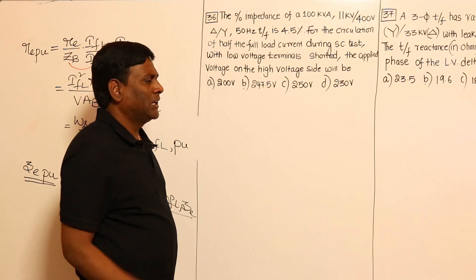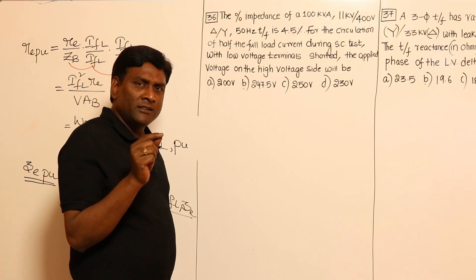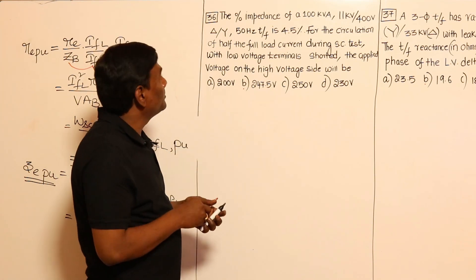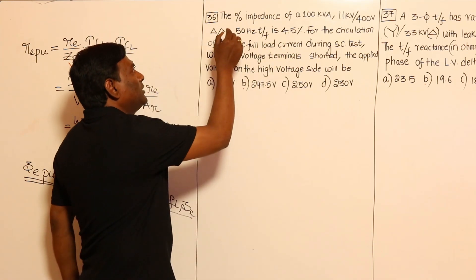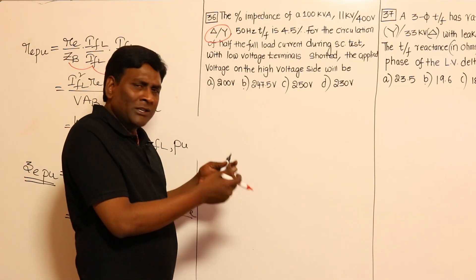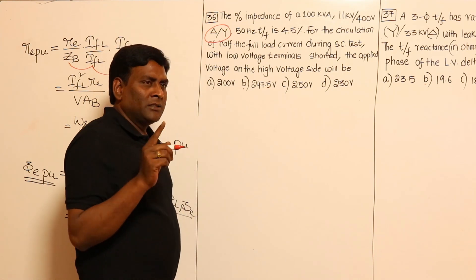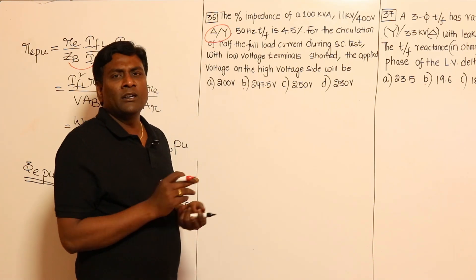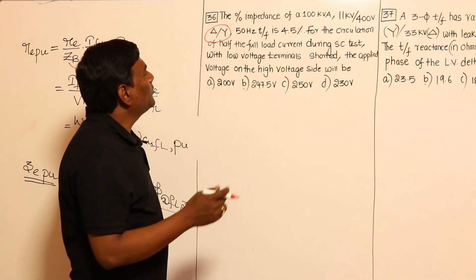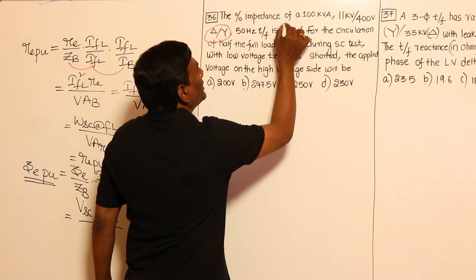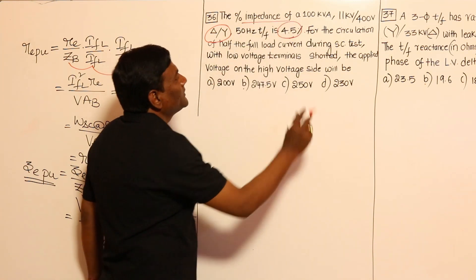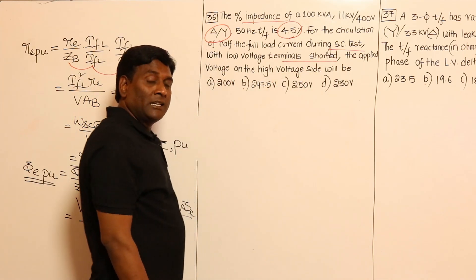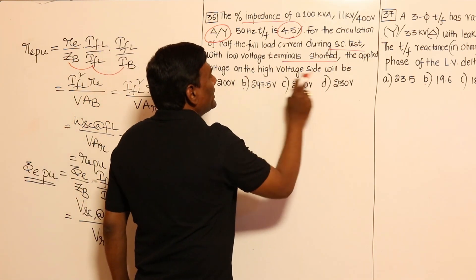This is a two-mark question from old GATE. To crack GATE, it's actually very simple — we just need to be strong in basics. The problem: the percentage impedance of a 100 kVA, 11 kV by 400 V, 50 Hz transformer is 4.5%. For the circulation of half full load current during the SC test with the low-voltage terminal shorted — meaning voltage is applied to the high-voltage side — find the applied voltage on the high-voltage side.